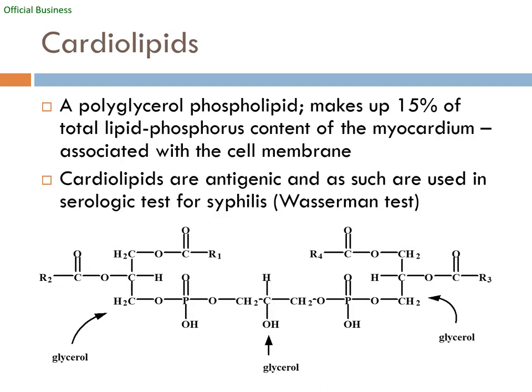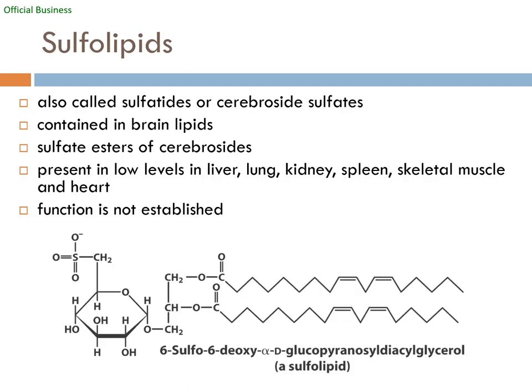Cardiolipids are polyglycerol phospholipids that make up about 15% of the total lipid phosphorus content of the myocardium — the muscles and cells of the heart. Sulfolipids are called such because they contain a sulfur group, but they similarly have a polar head and a non-polar tail with cis double bonds.